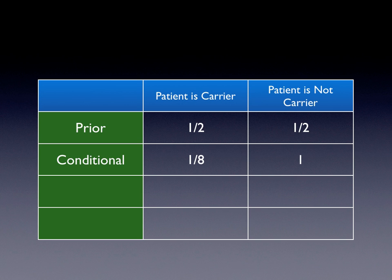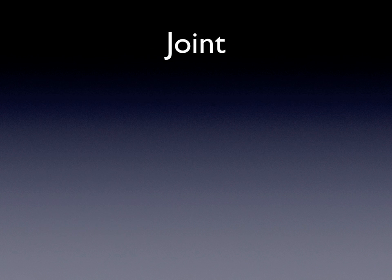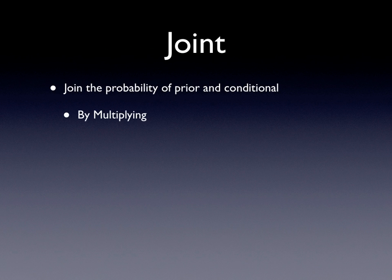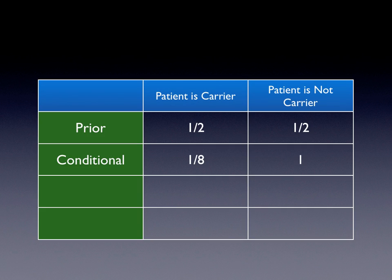I want to pause here to illustrate what Bayes' Theorem is actually doing. In the prior, with just family history, we can say it's a 50-50 chance. Now that we have this extra information — that she's already had these kids — we can use it to calculate a more accurate probability. With the conditional, her chances of being a carrier go from one-half to one-eighth, which is expected if she has three healthy boys.